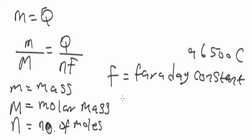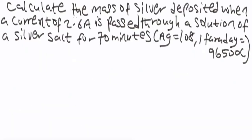This is the formula we are going to make use of. Let's look at a typical problem. Calculate the mass of silver deposited when a current of 2.6 amperes is passed through a solution of silver salt for 70 minutes. The molar mass of silver is 108 g/mol and Faraday's constant is 96,500 coulombs.